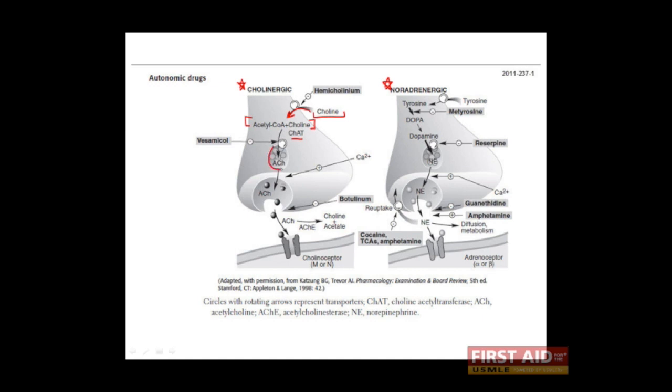When an action potential travels down the axon and reaches the terminal, this results in depolarization of the membrane and causes voltage-gated calcium channels to open and allow calcium to enter into the nerve terminal. This in turn triggers the fusion of acetylcholine containing vesicles with the cell membrane, which results in the release of acetylcholine into the synaptic cleft.